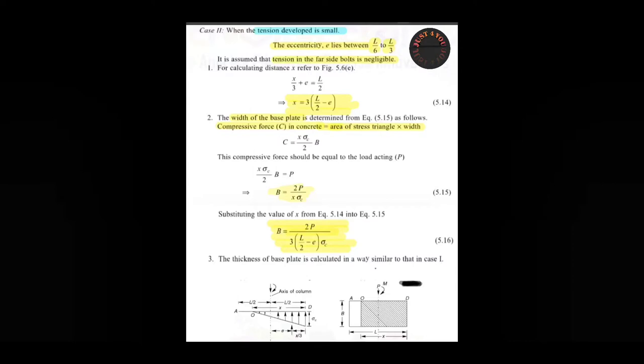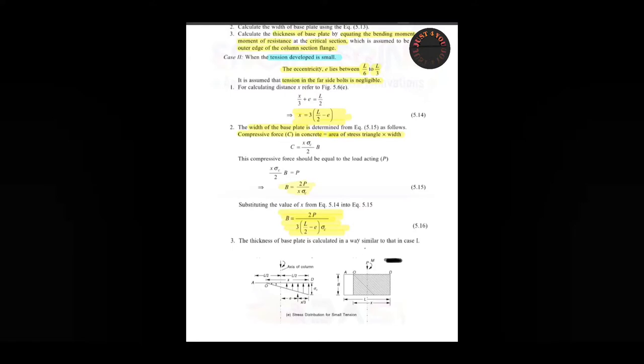The eccentricity length is x/3 distance from D, and the distance from here to the end is l/2. So we need to find the value of x. From this diagram, x/3 plus e is equal to l/2. After rearranging, we get the value of x, which is our equation 5.14.